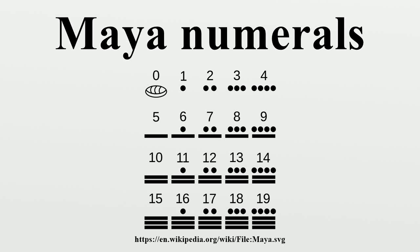The Maya numeral system is a vigesimal positional numeral system used by the pre-Columbian Maya civilization. The numerals are made up of three symbols: 0, 1, and 5. For example, 13 is written as three dots in a horizontal row above two horizontal lines stacked above each other.